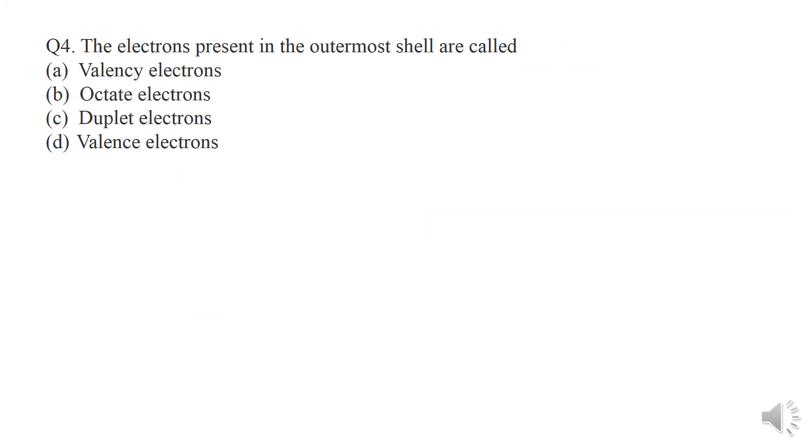Question number 4: the electrons present in the outermost shell are called what? We have seen electrons in different shells which we can mark K, L, M, and N. If we talk about, for example, sodium with atomic number 11, how do we arrange 11 electrons?